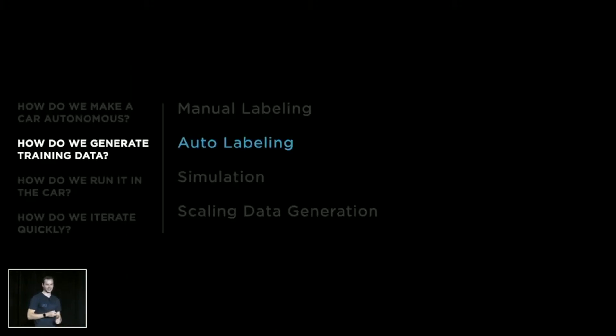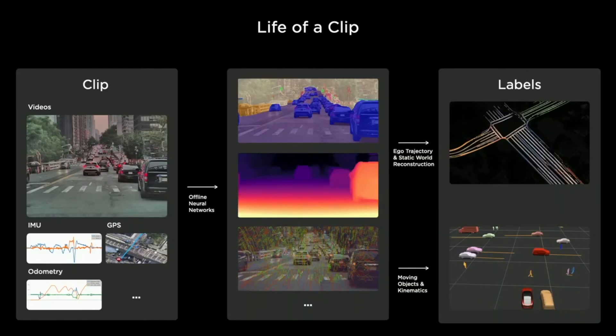We're going to talk about auto-labeling, which is some of the infrastructure we've developed. A clip is an entity that has dense sensor data like videos, IMU data, GPS, etc. — typically 45 seconds to a minute long. These can be uploaded from our own engineering cars or customer cars. We collect these clips and send them to our servers where we run neural networks offline to produce intermediate results like segmentation masks, depth, point matching, etc. This then goes through robotics and AI algorithms to produce a final set of labels that can be used to train the networks.